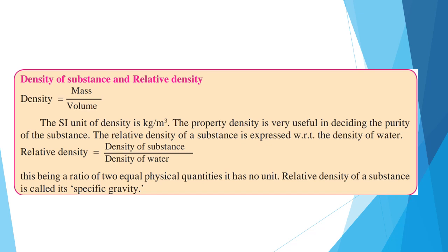This being a ratio of two equal physical quantities, it has no unit. Relative density of a substance is called its specific gravity. Students, you all have to learn these formulas. You all have to keep it in mind. Density is equal to mass upon volume. Relative density is equal to density of substance upon density of water. I hope you all understand whatever I tried to teach you all today.